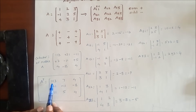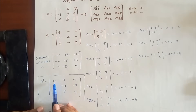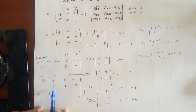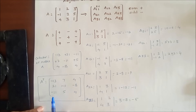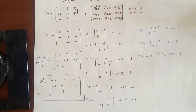That matrix gives us the adjoint as: [-13, 7, 4; 21, -11, -8; -11, 5, 4]. So by this method, we can calculate the adjoint of a 3x3 matrix. Thank you.